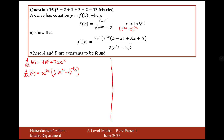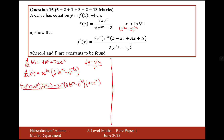Let's now apply the quotient rule to all of this. The quotient rule is u dash v minus v dash u over v squared. So it's the differential of u first: that's 7e to the x plus 7xe to the x. That gets multiplied by the normal v function, e to the 3x minus 2, minus the differential of v — 3e to the 3x times a half e to the 3x minus 2 to the power of minus a half — times the normal u function, 7xe to the x.